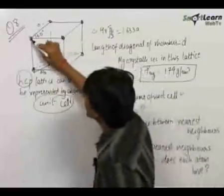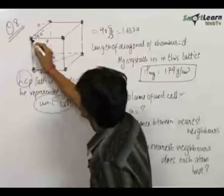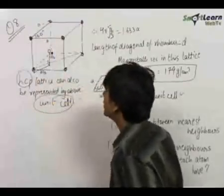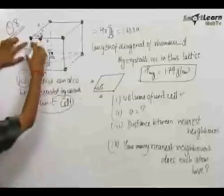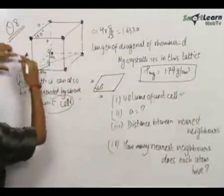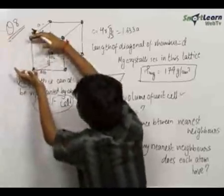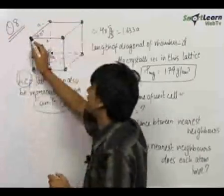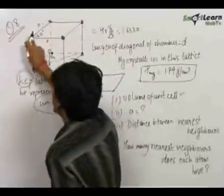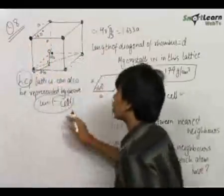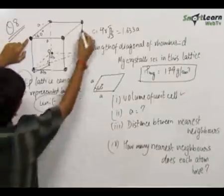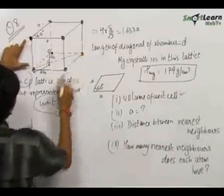Looking at a corner atom where the two edges meet at 60 degrees, there will be 6 other unit cells in this plane sharing this atom, and 6 other unit cells above those, making 12 unit cells sharing this atom. Therefore, the contribution of this corner atom is 1/12. The same applies for all 4 atoms at these 60-degree corners.